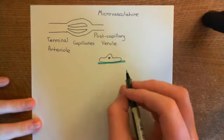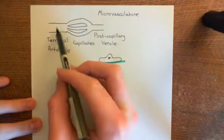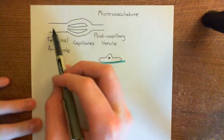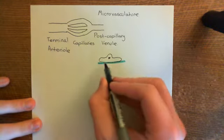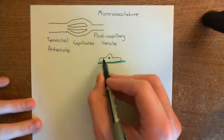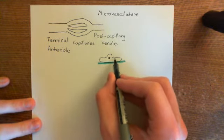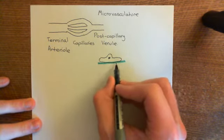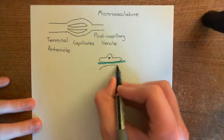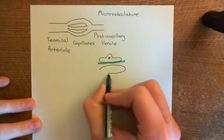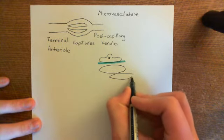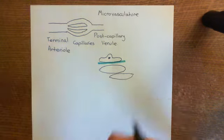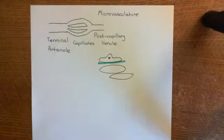Arterioles are slightly more complicated — a tiny blood vessel with only a few red blood cells fitting through at once, but with thicker walls: endothelial cells on a basement membrane with smooth muscle cells around the outside, giving a thin layer of vascular smooth muscle cells surrounding them.